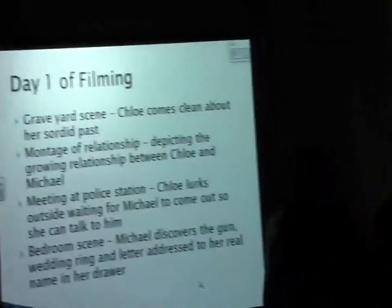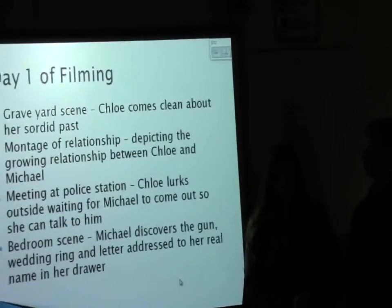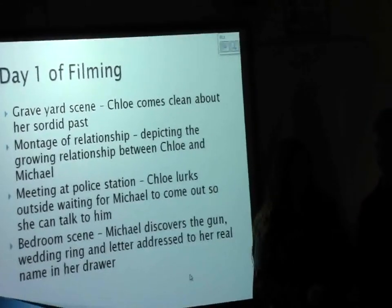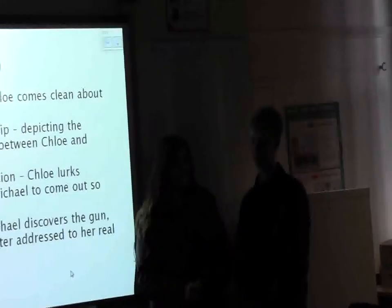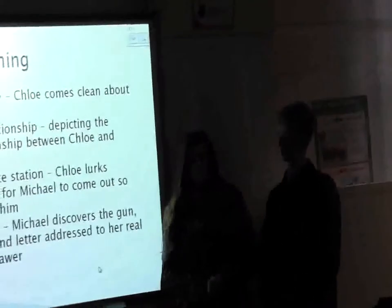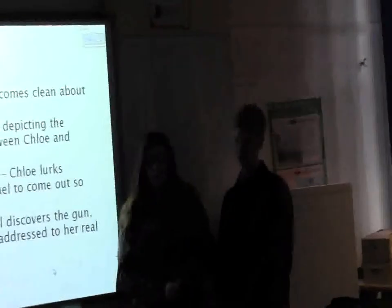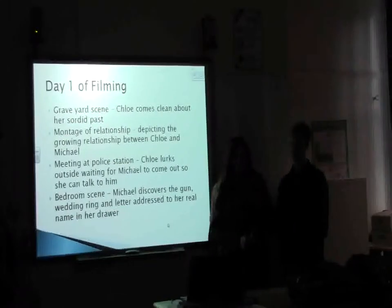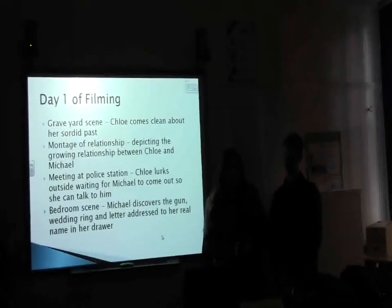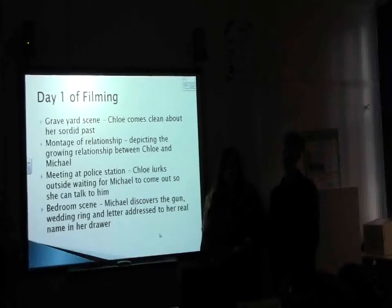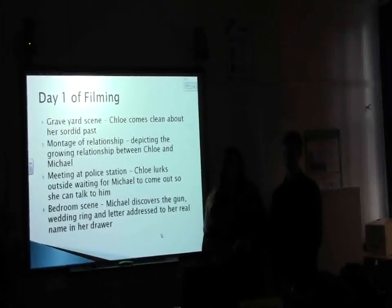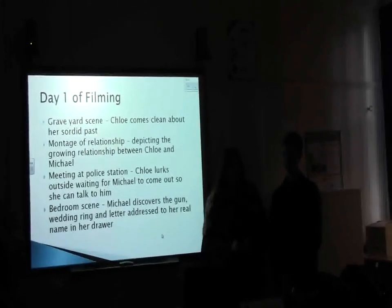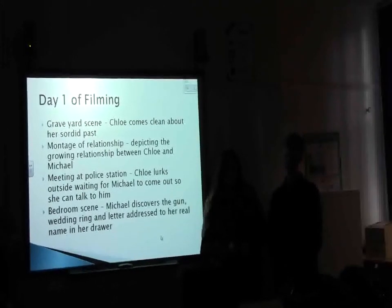For our first day of filming, we planned to film the graveyard scene at the start where Chloe comes clean about what she did, and then it also goes to the flashback. We also filmed the start of the montage of their relationship, depicting the growing relationship between Chloe and Michael. We filmed the meeting at the police station, which is the first time Chloe meets Michael — she's waiting outside for him so she can talk to him. And we filmed the bedroom scene, where Michael discovers the gun, the wedding ring, and the letter in her drawer.